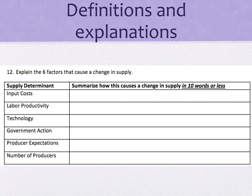Now the six supply determinants: input cost, labor productivity, technology, government action, producer expectations, and number of producers. Input cost is the price of productive resources — the ingredients needed to make a good or service. As the price goes up, supply goes down; as price goes down, supply goes up. Labor productivity — think education of your workforce — is the quantity of units producers can make in a given time. As productivity increases, supply increases; as productivity decreases, supply decreases. Technology is the application of scientific methods to the production process, resulting in a new product or manufacturing technique. As technology advances, supply increases; when technology fails, supply decreases.